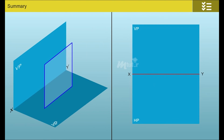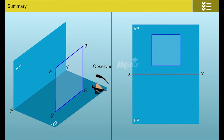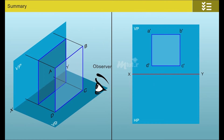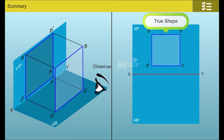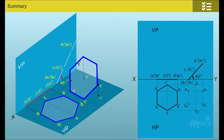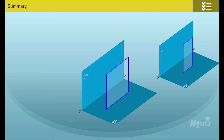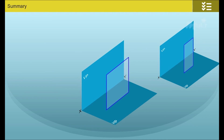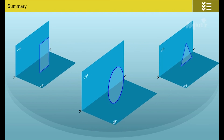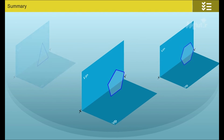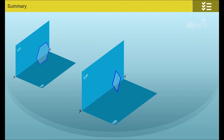In this lesson, we have learnt about the different views of a plane, the orthographic projection of a plane, and the positioning of square, rectangle, circle, triangle, pentagon, hexagon, and rhombus in the principal plane.